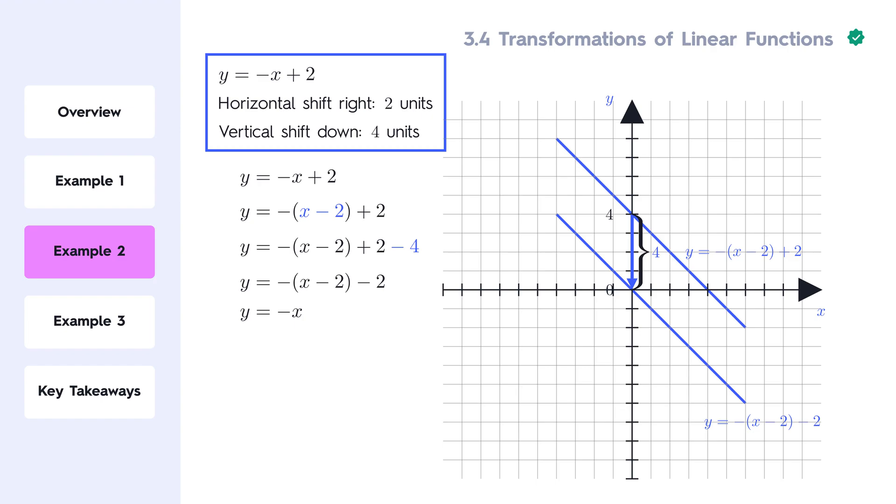After applying a horizontal shift of 2 units to the right and a vertical shift of 4 units down, the new equation of the function is y equals negative x.